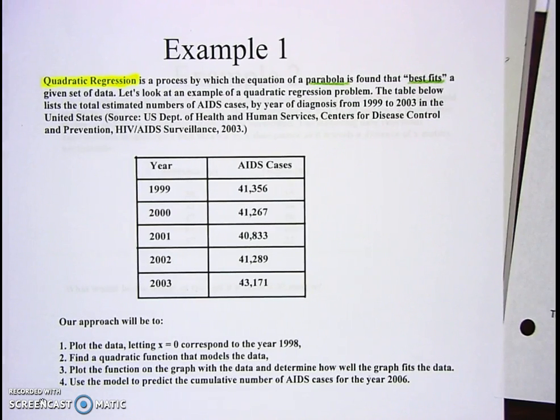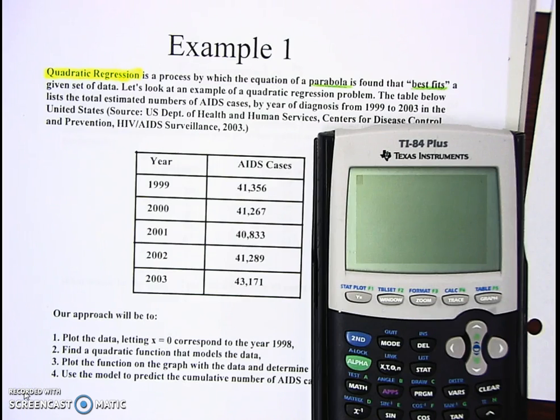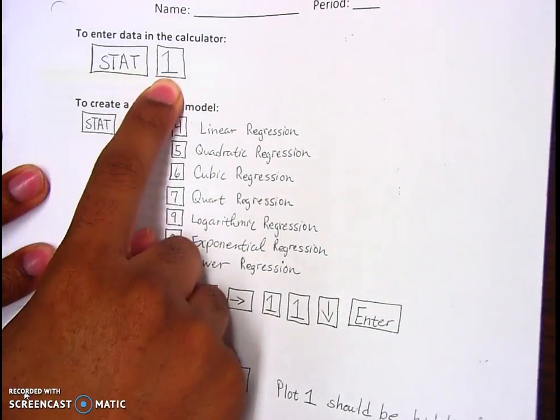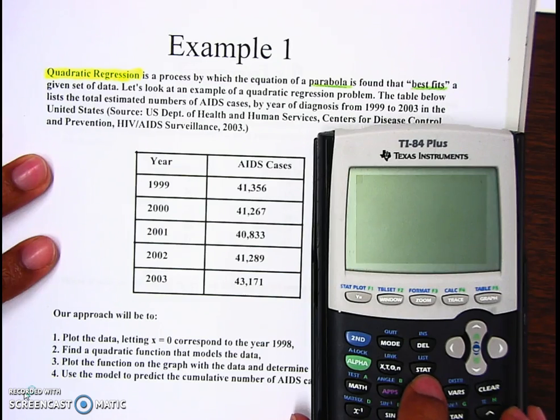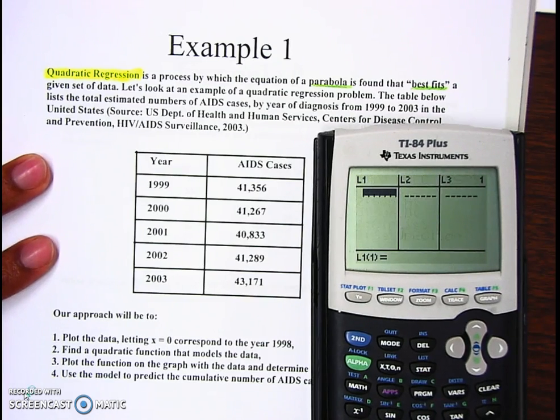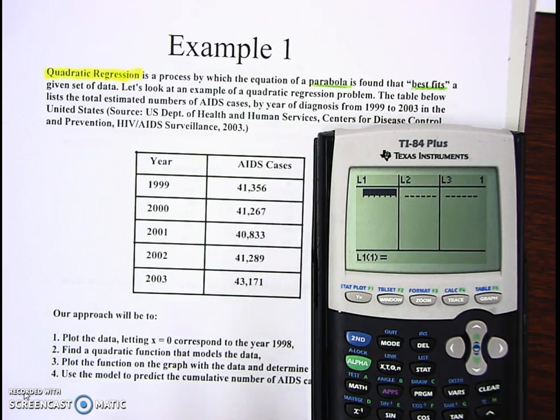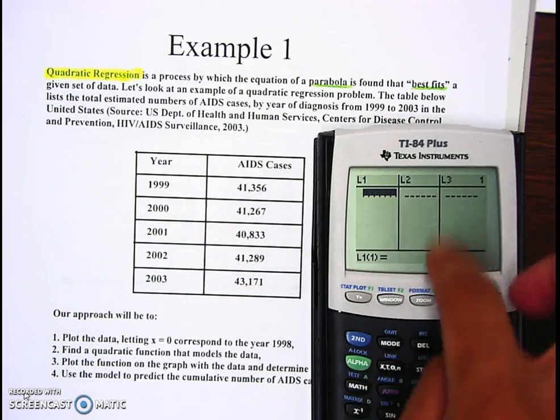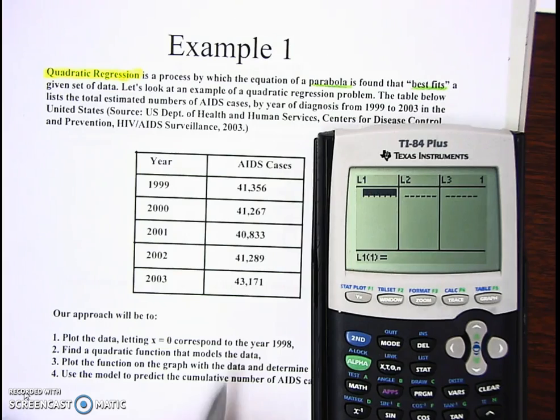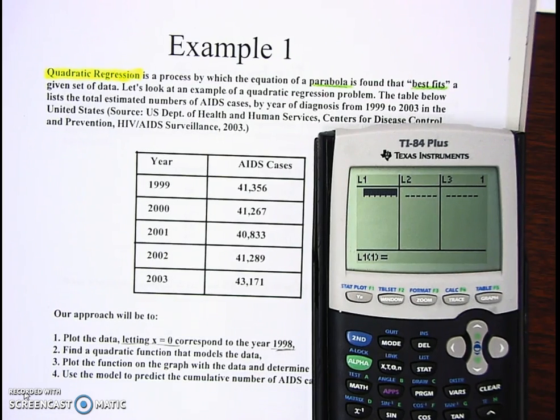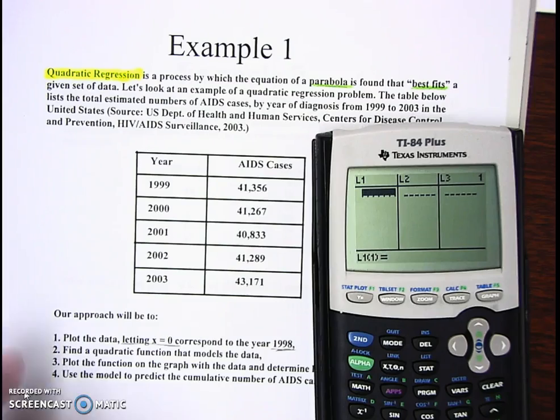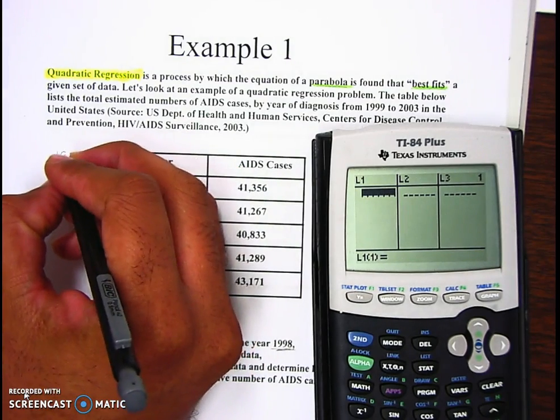Get out your calculator. We're going to put the numbers in. The first thing says we're going to hit the STAT button and number one. We fill in the table from what's here, but we have to follow what they say on number one - we're letting x correspond with 1998, so x equals 0 for 1998.